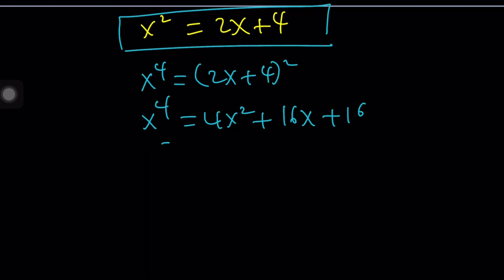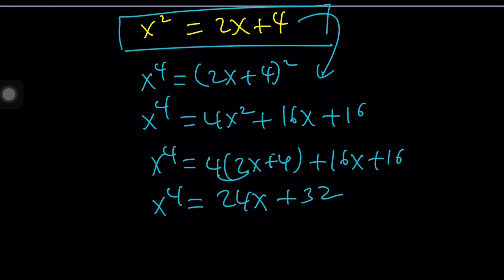Actually, before we do that, we can go ahead and do this. Let's go ahead and replace x squared with this, which is 2x plus 4. And then we get plus 16x plus 16. And now, this is going to give us x to the fourth equals 8x plus 16x. 16 plus 16 is going to be 32. So far, so good.